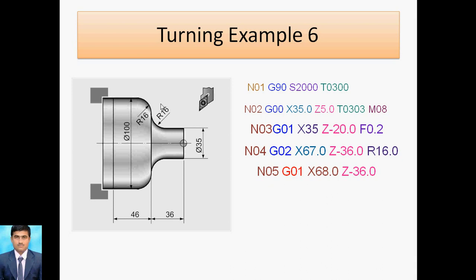After the clockwise arc, G01 linear interpolation: X68 Z minus 36 — only 1 mm difference from 67 to 68. Then the anti-clockwise circular interpolation: G03 X100 final diameter. Z value is 36 plus 16 equals 52, so Z minus 52. Radius R16.